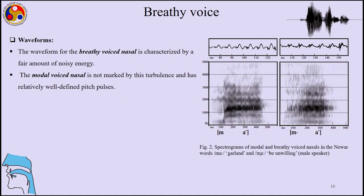Looking at the waveforms, the waveform for the breathy voice nasal is characterized by a fair amount of noisy energy. The modal voice nasal is not marked by this turbulence and has relatively well-defined pitch pulses. In the spectrograms, the modal voice nasal has fairly well-defined pitch pulses, while the breathy voice nasal shows irregularly paced pulses in the first half, with the difference visible around 150 hertz near the transition to the vowel.